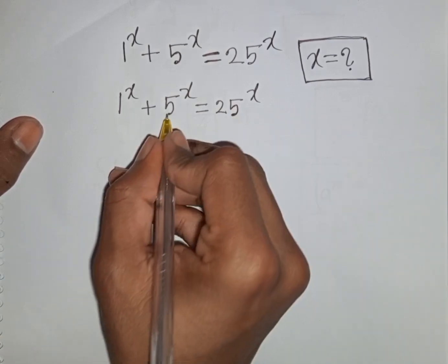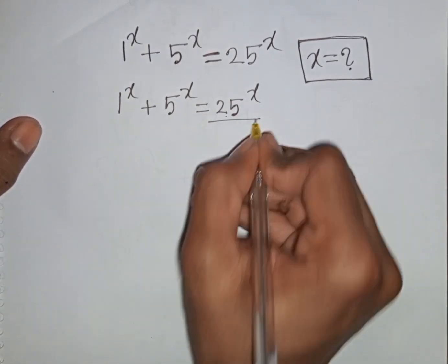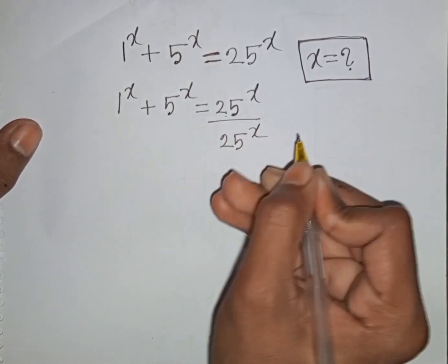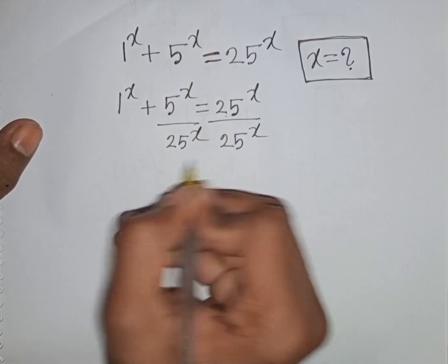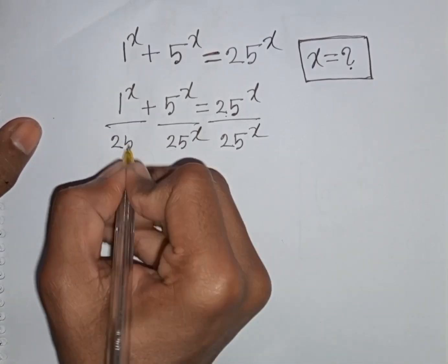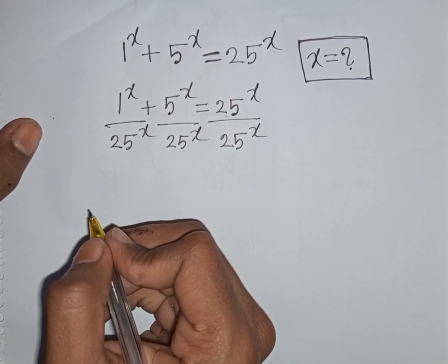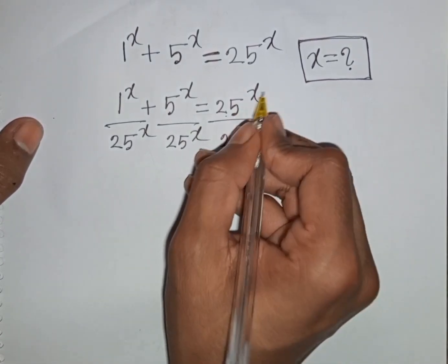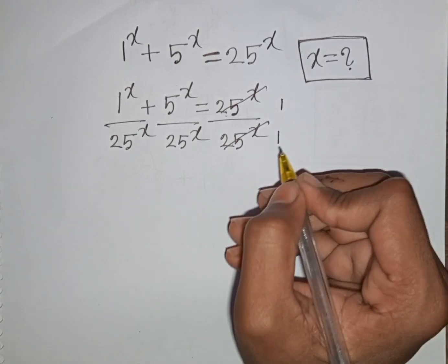Now, we divide everything by 25 power x — divide by 25 power x on both sides. This 25 power x on the right side will be cancelled.